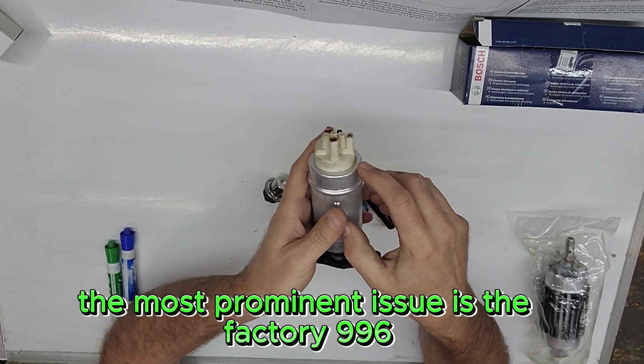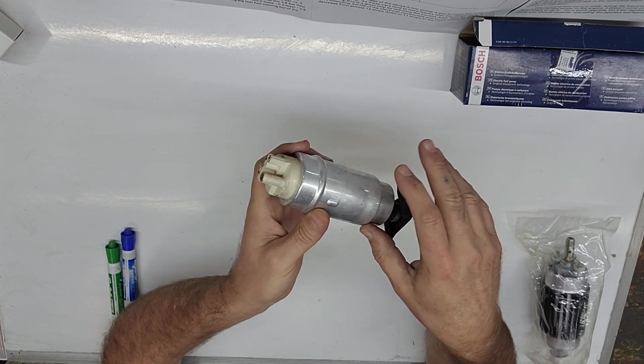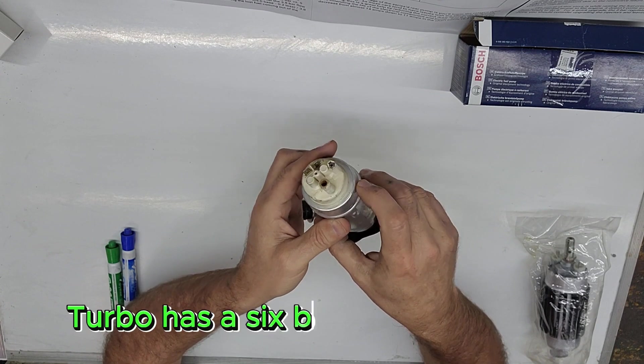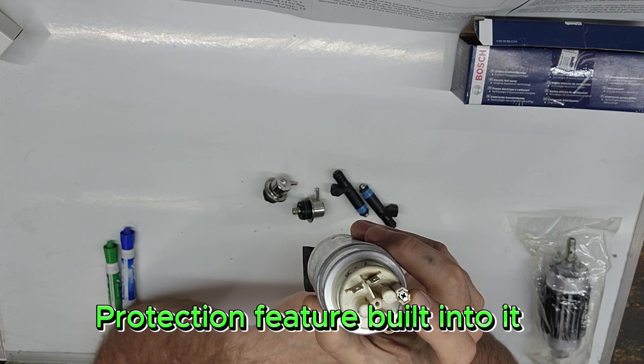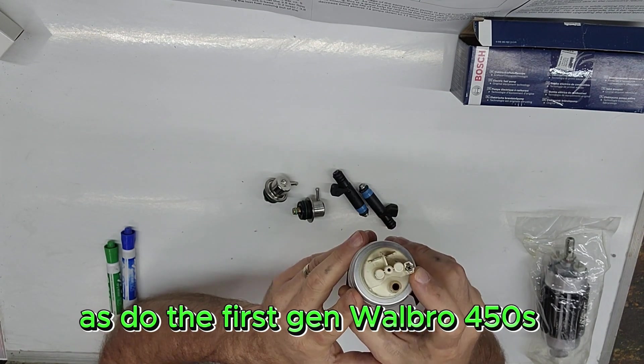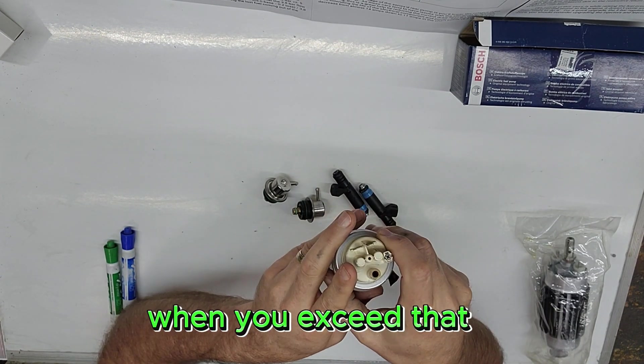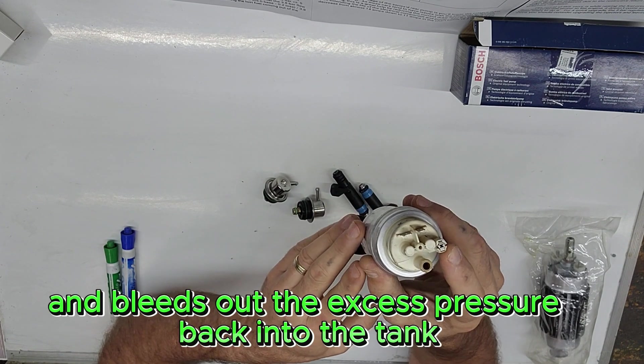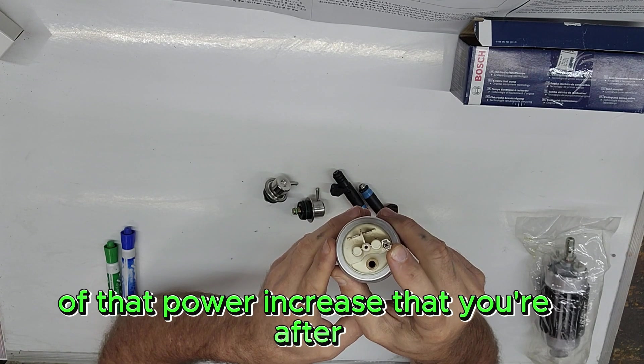The most prominent issue is the factory 996 turbo fuel pump that has a hidden little surprise. The OEM fuel pump in the 996 turbo has a 6 bar over pressure protection feature built into it, as do the first gen Walbro 450s and many other popular fuel pumps. When you exceed that, it opens up this port and bleeds out the excess pressure back into the tank, robbing your engine of that power increase that you're after.